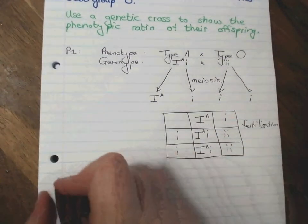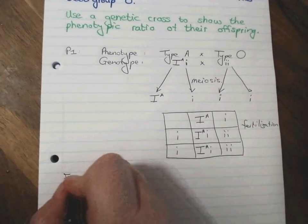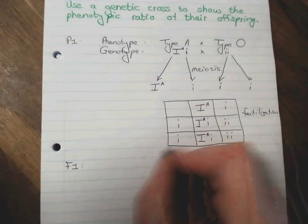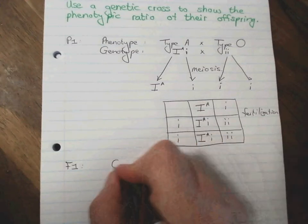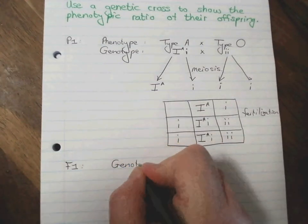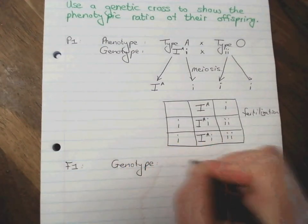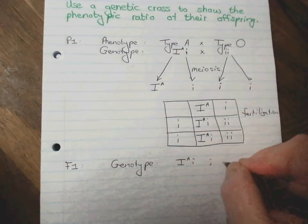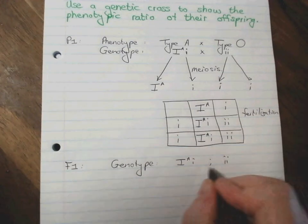There we go. Right. And that means we are now in the F1 generation. Now in the F1 generation, we have two types in the genotype. Now they don't actually ask for the genotype here, but my paranoia always makes me write them down. So there's my genotypes.